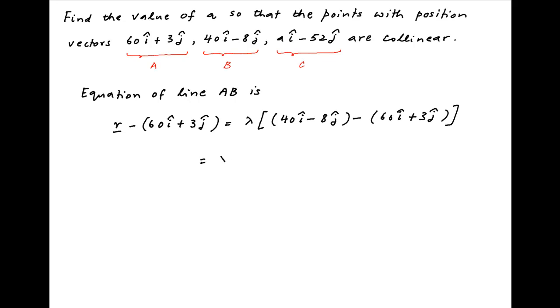The right hand side simplifies to lambda times in brackets minus 20i minus 11j. Therefore the equation of line AB is given by vector R is equal to 60i plus 3j plus lambda times in brackets minus 20i minus 11j